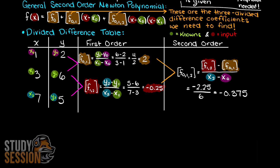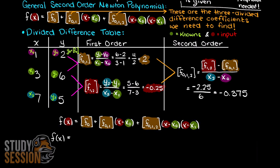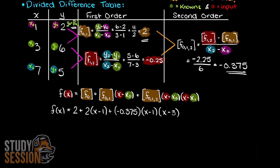As you can see we now have our three necessary coefficients. Remember, we learned in the theory video that f0 is simply y0. Just as a quick note, when completing even higher order divided difference problems, your coefficients will always be the highest divided difference within a given order column. To solve for our interpolating polynomial, we are going to input our coefficients and simplify.